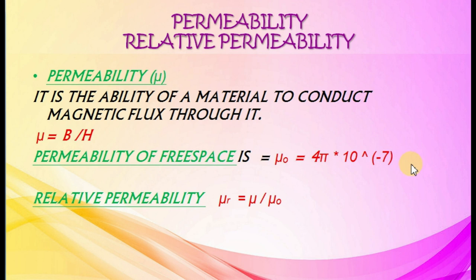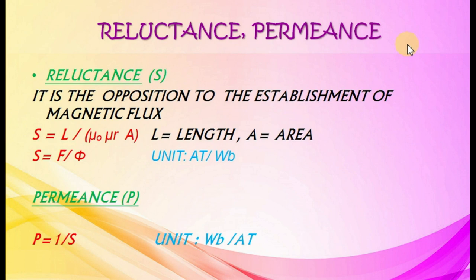Reluctance and permeance. Reluctance S is the opposition to the establishment of magnetic flux. S equals L by (mu zero times mu R times A), where L is length and A is area. Also S equals F by phi. Unit is ampere-turns per Weber. Permeance P equals 1 by S. Unit is Weber per ampere-turn.